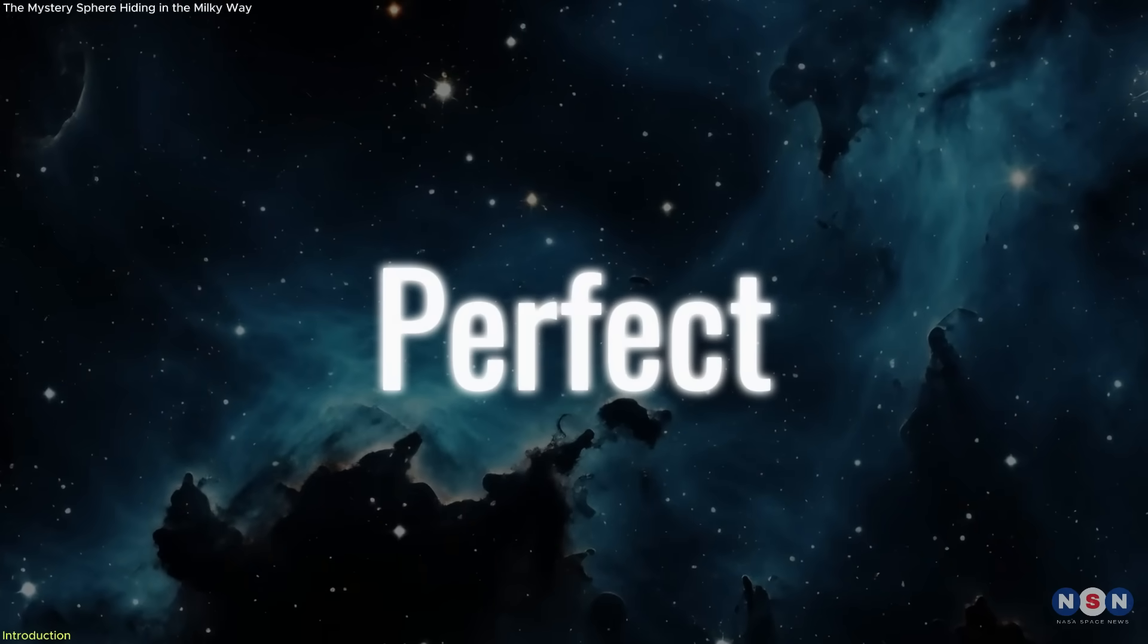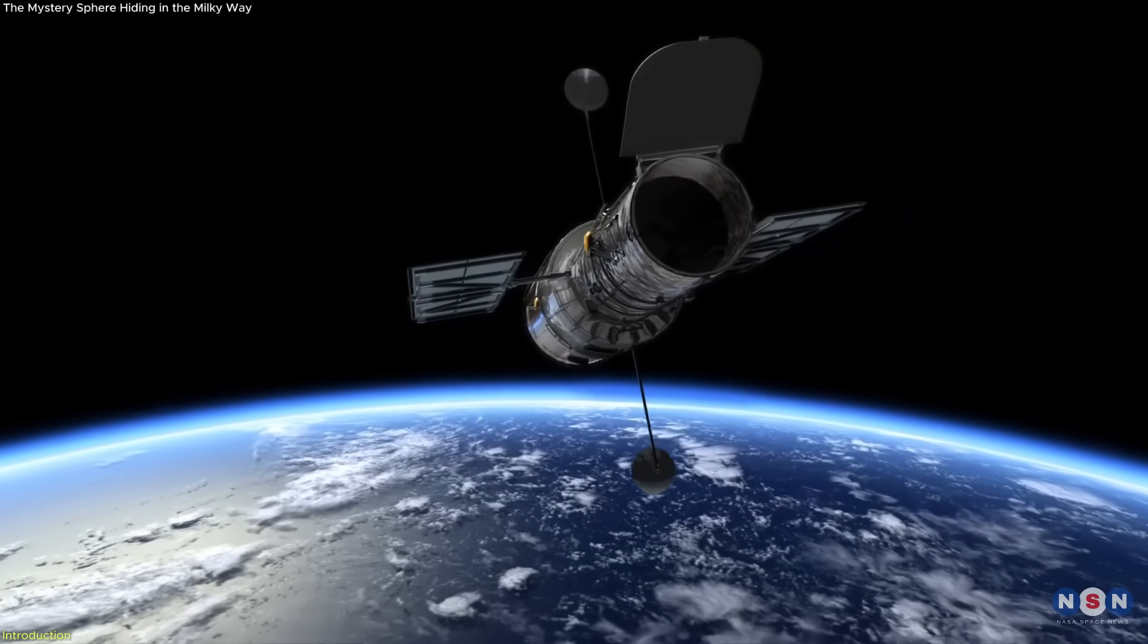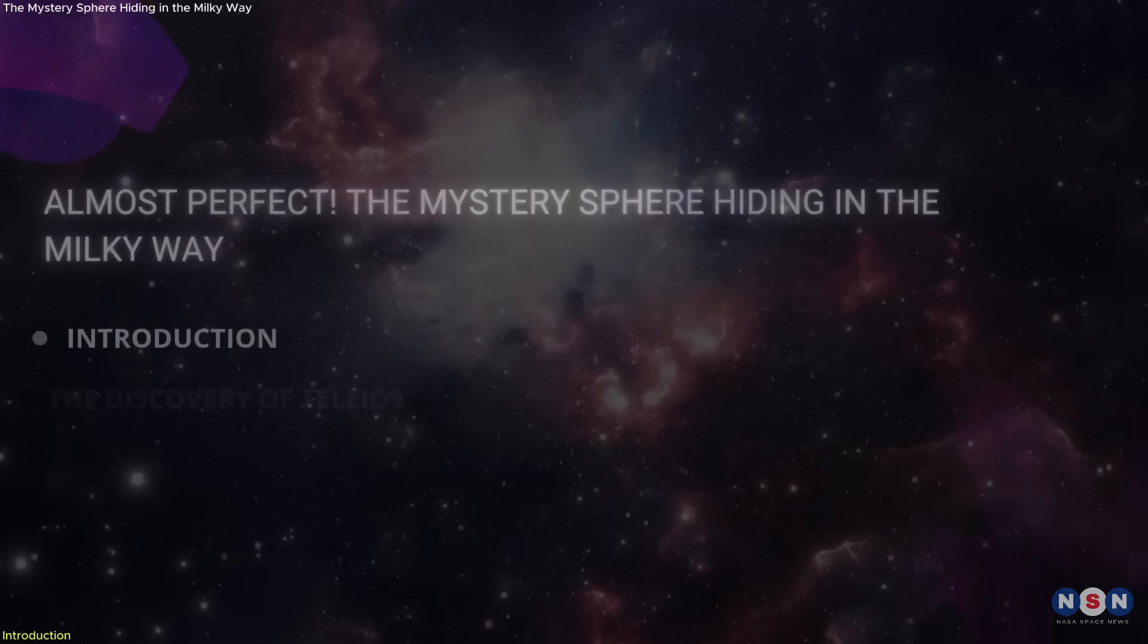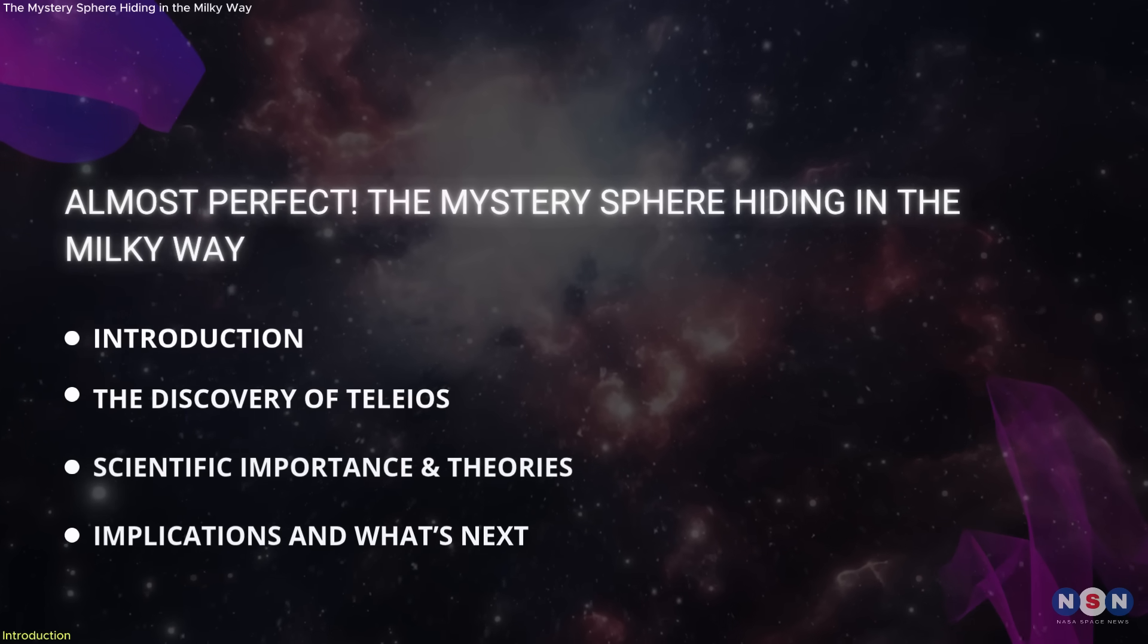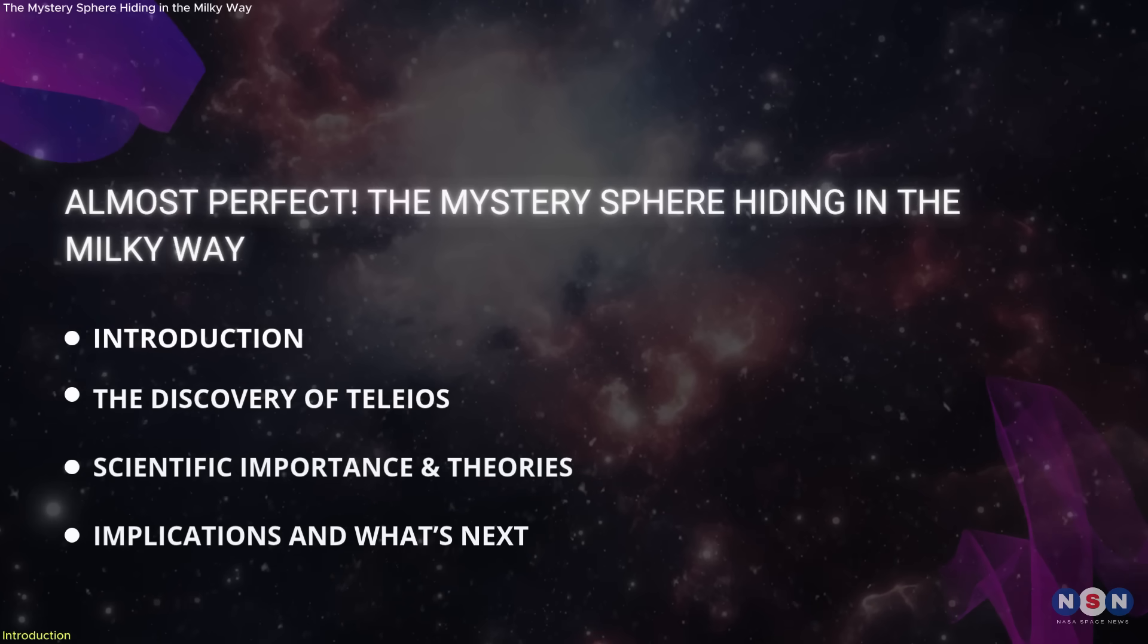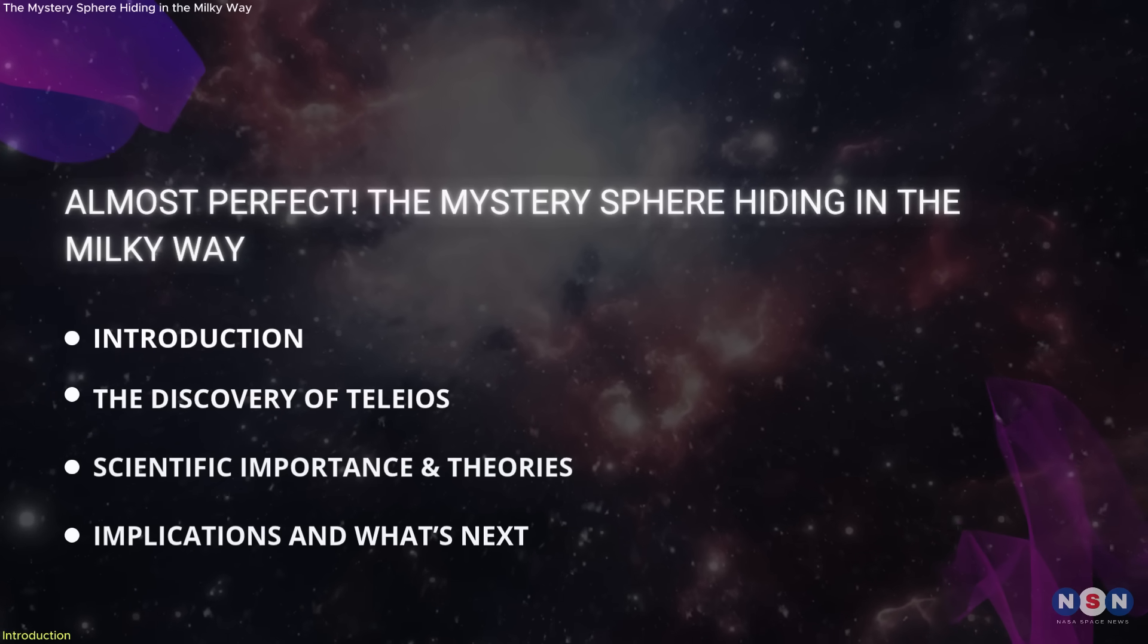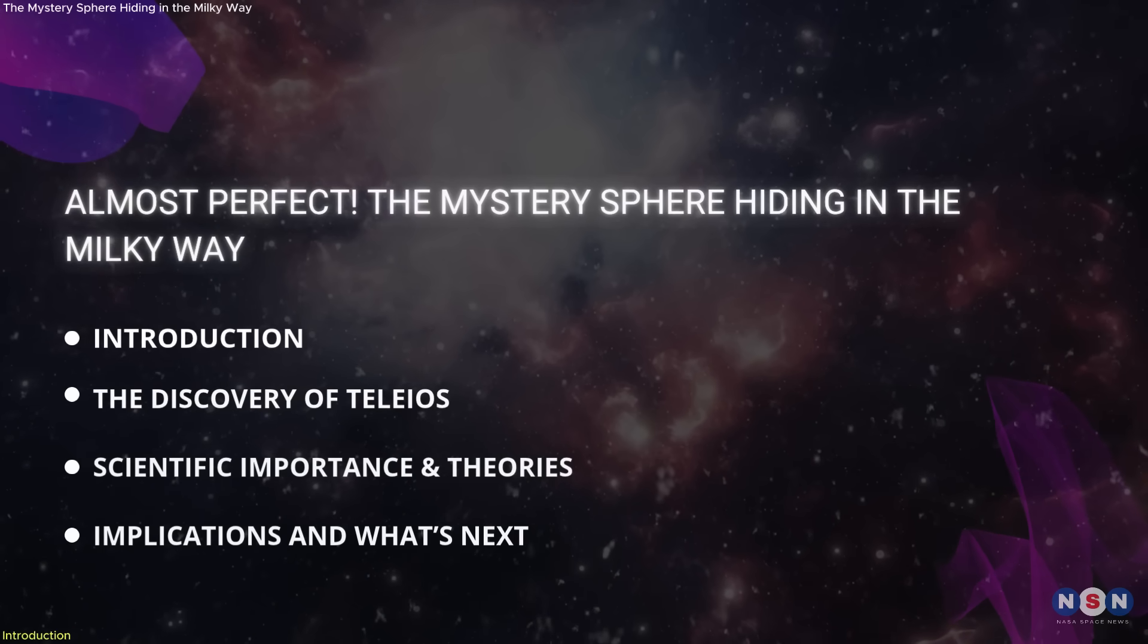Scientists gave it a name that means perfect. But what it is, and how it formed, is a mystery that's raising eyebrows across the astronomy world. In this episode, we'll unpack the clues, retrace the accidental discovery, and explore why this flawless structure could challenge what we thought we knew about the violent life and death of stars, and the quiet, strange things they sometimes leave behind.